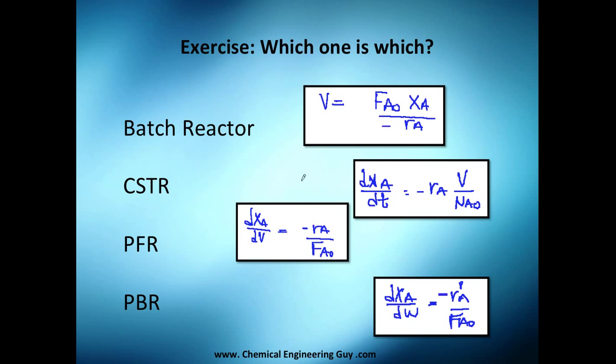Let's do this little exercise: which one is which? I got this batch reactor, I got this continuous stirred tank reactor, I got this plug flow reactor, and the packed bed reactor. Just to remind you how these reactors look: I got this packed bed inside this reactor, I got an inlet F_A0, and I got an outlet F_A.